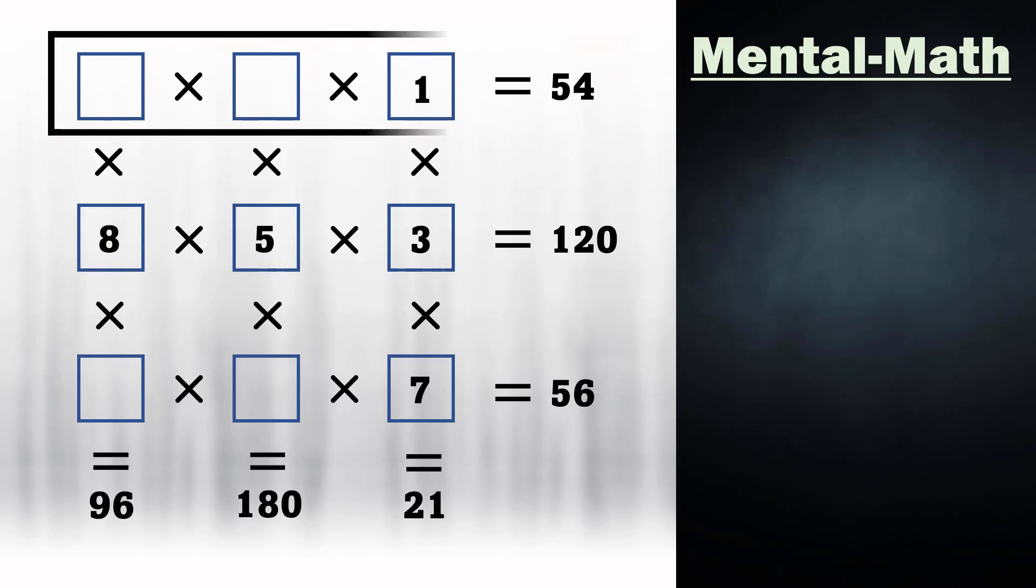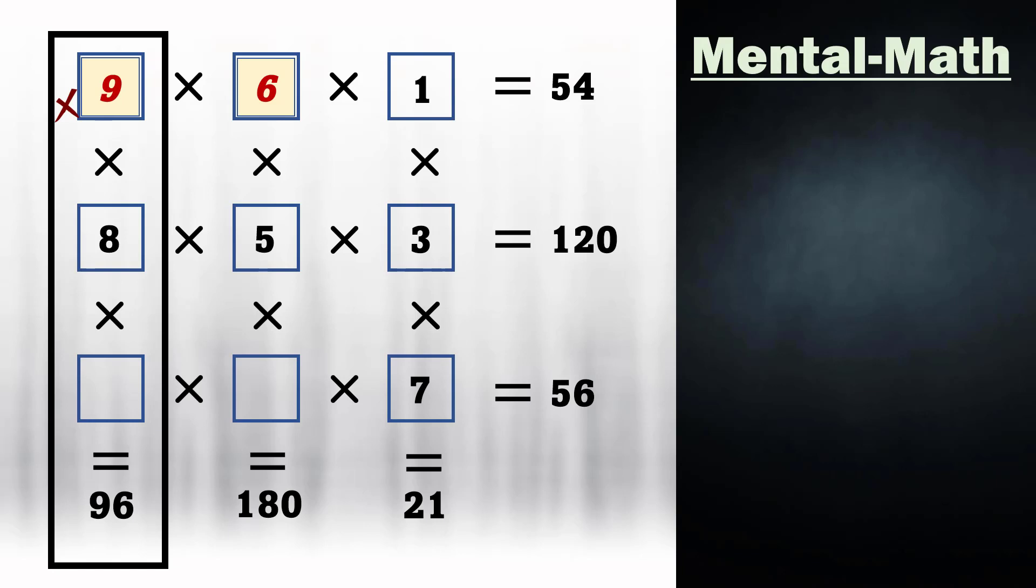Now in the first row, to get the result 54, we can have the combination either 6 and 9 or 9 and 6. But the number 9 cannot be present in the first column as 96 is not divisible by 9. So here it must be 6 and that's why 9 would be in the middle square.